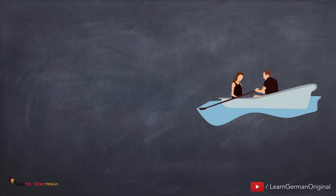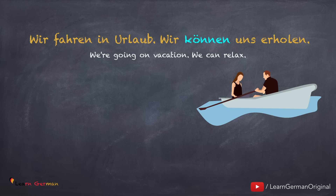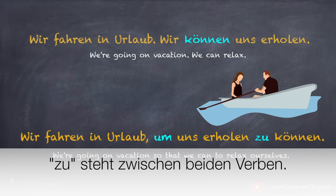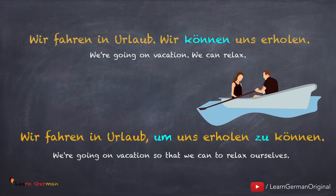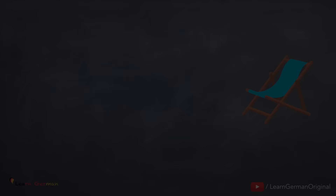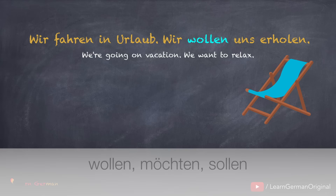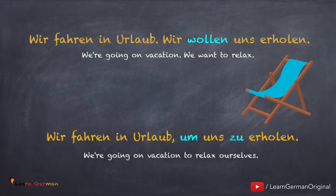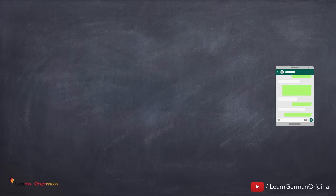Was passiert, wenn man in dem zweiten Satz zwei Verben hat? Zum Beispiel: Wir fahren in Urlaub. Wir können uns erholen. While making a sentence with um…zu, you have to remember that only the verb in the second position will go at the end. In this case, zu will be placed between both the verbs: Wir fahren in Urlaub, um uns zu erholen. Wir fahren in Urlaub. Wir wollen uns erholen. Hinweis: Modalverben wie möchten, wollen und sollen werden nicht mit um…zu benutzt.